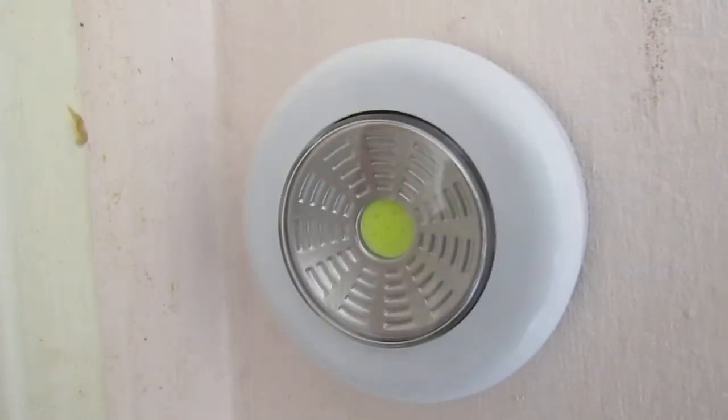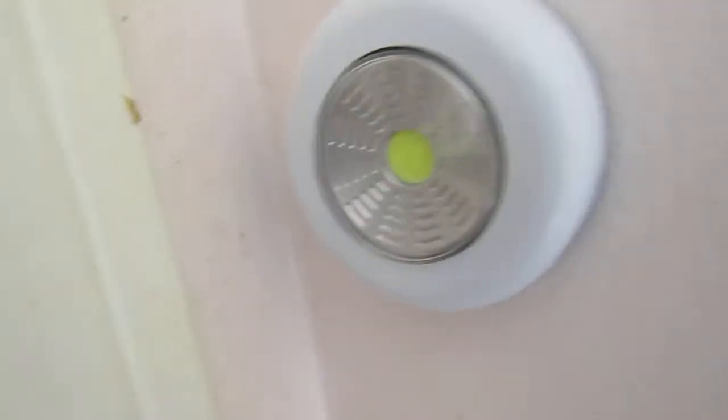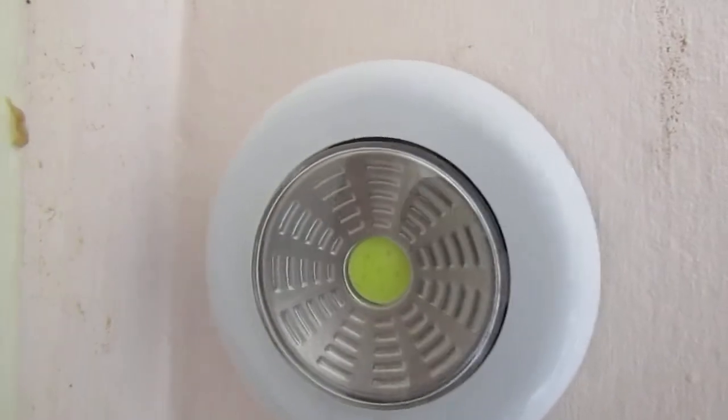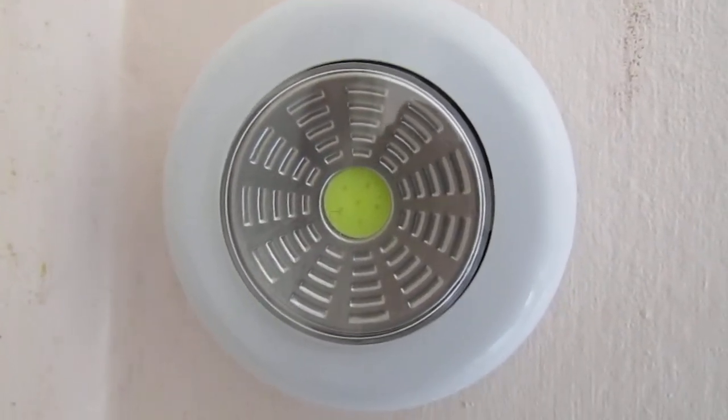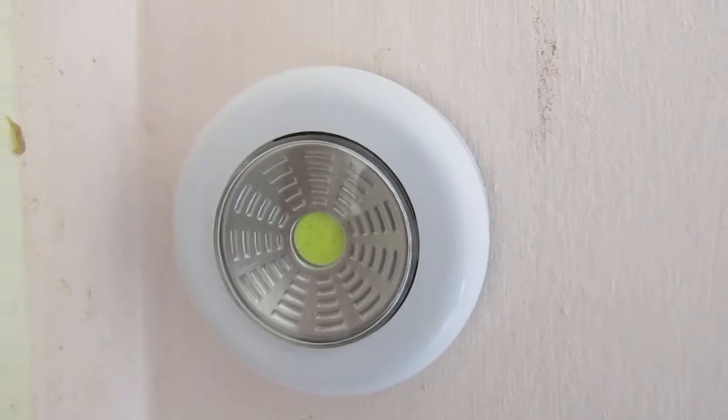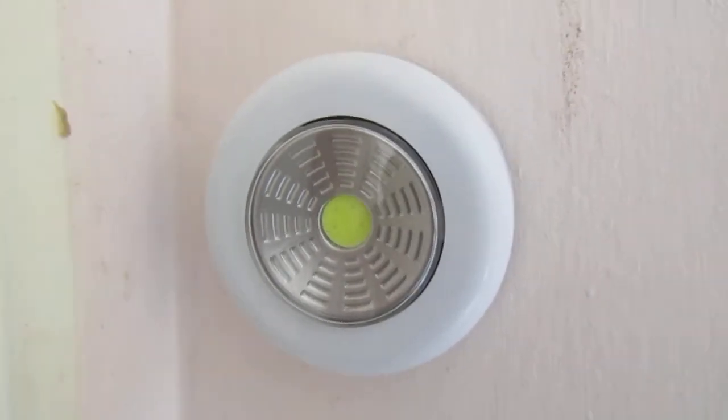This is the emergency wall light and it is 80 lumens. So if the light in your house goes away, you can use this.